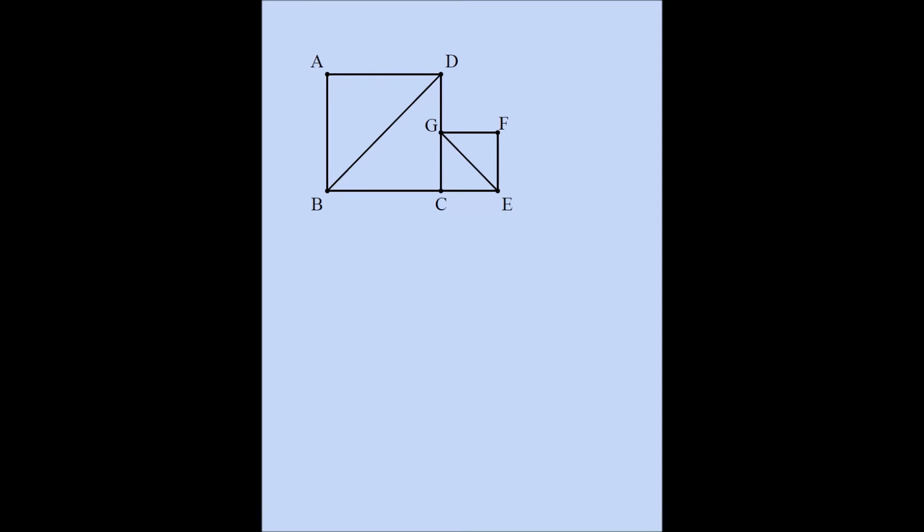We're going to connect point B to D and point G to E. Note these are the diagonals of our two squares. Now we're going to connect point D to E and point B to G.